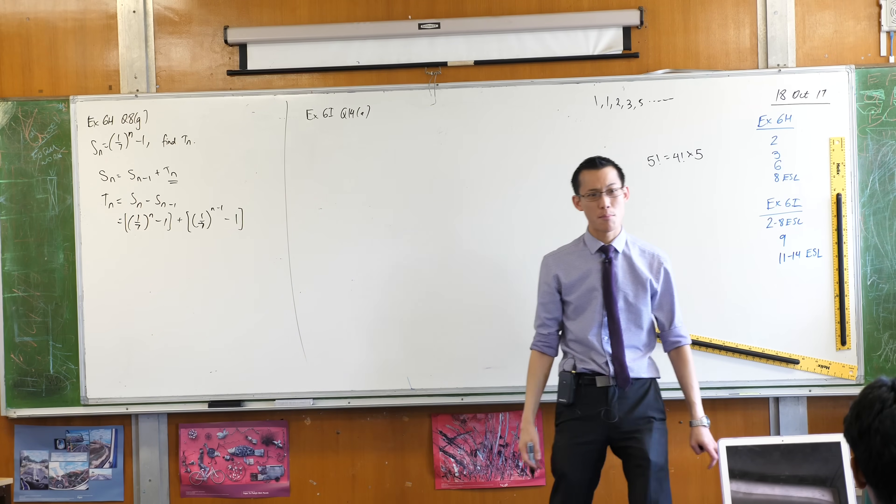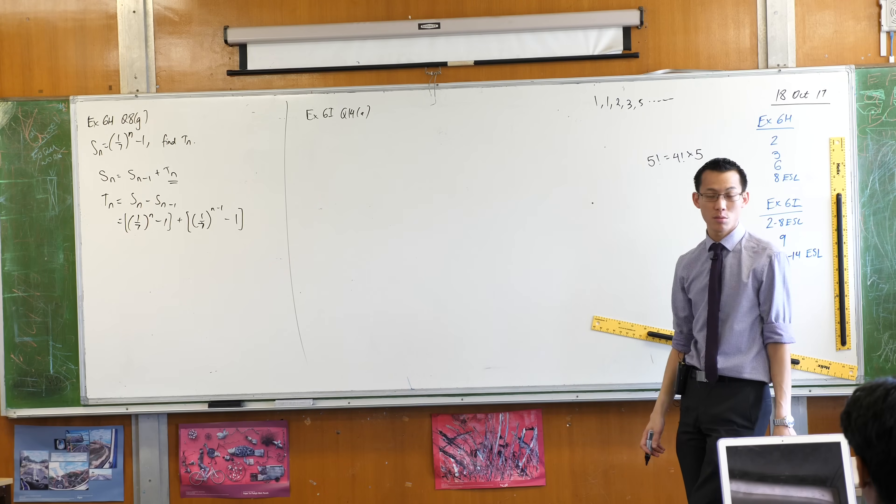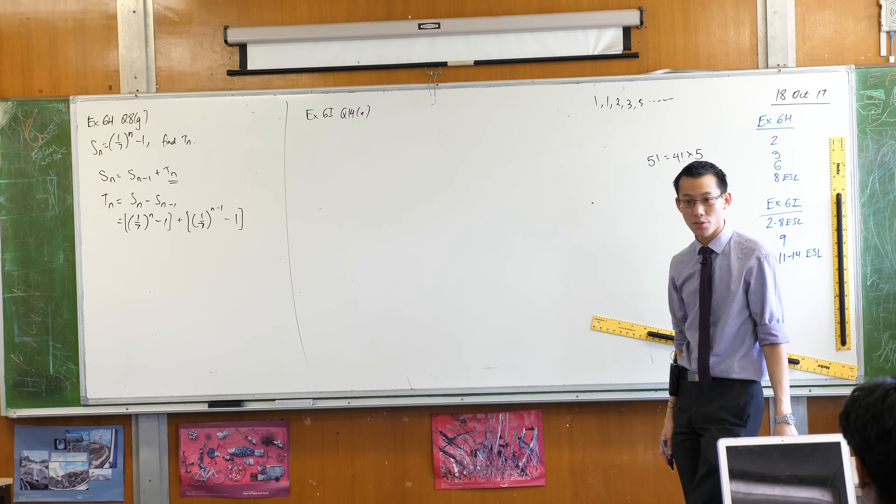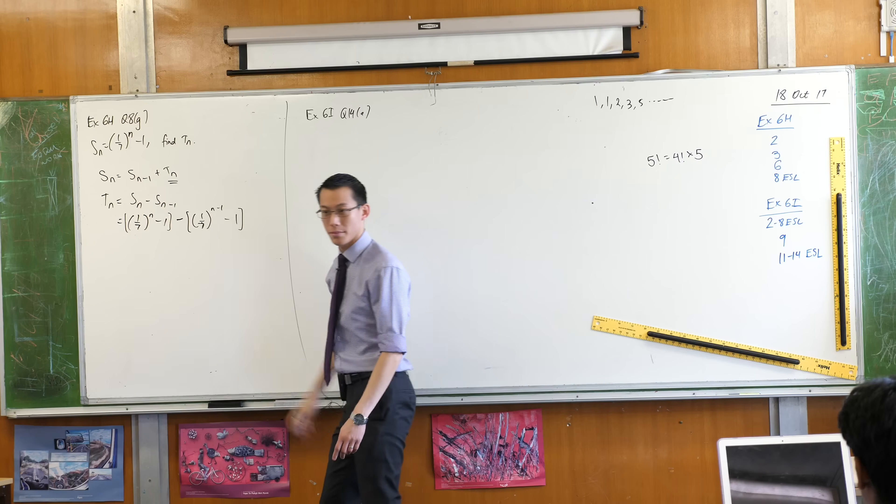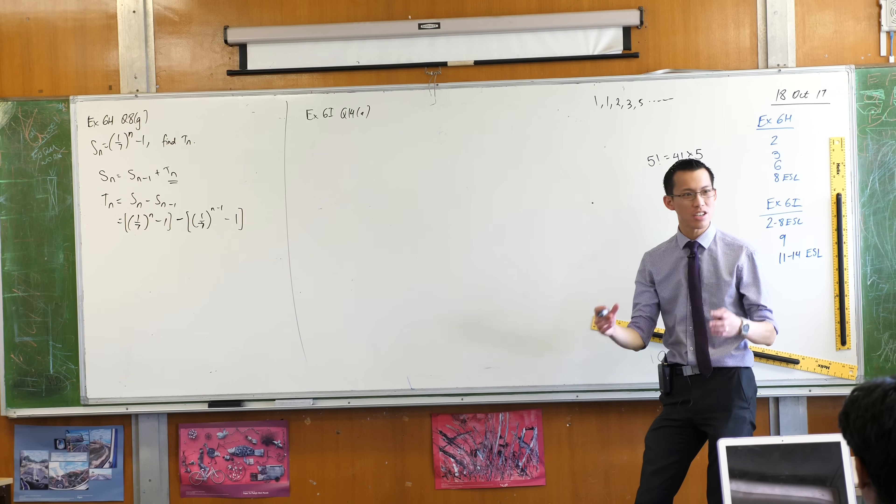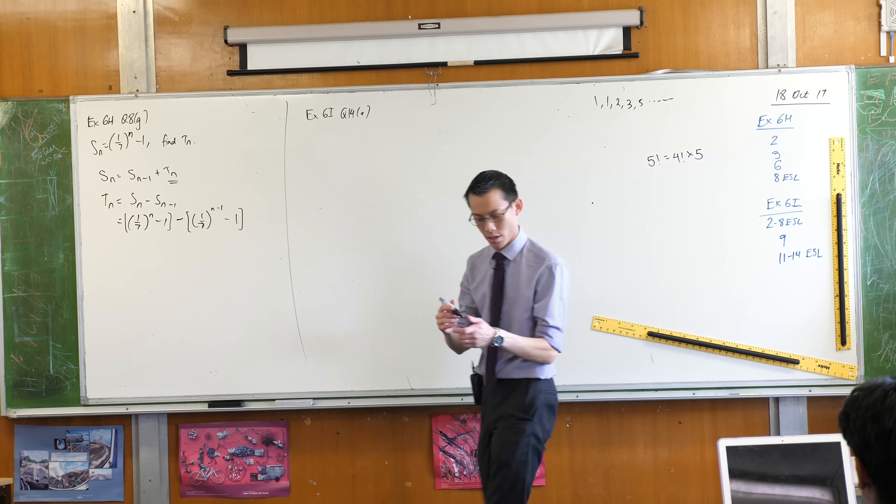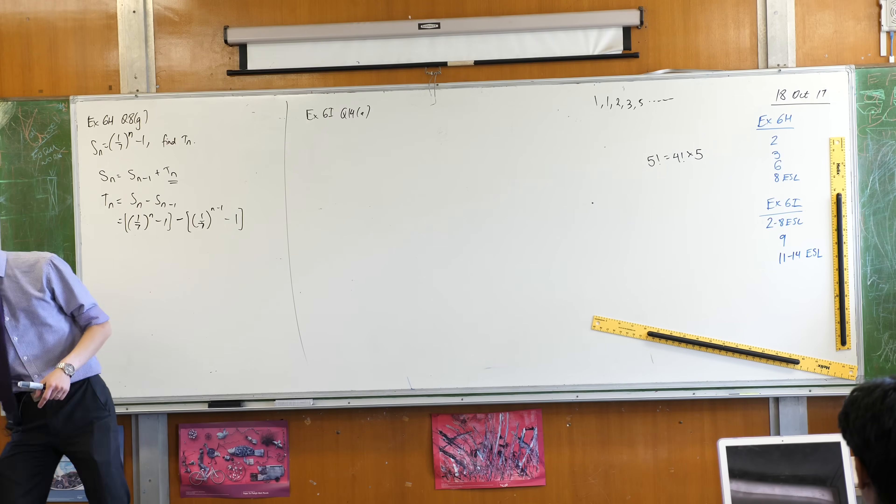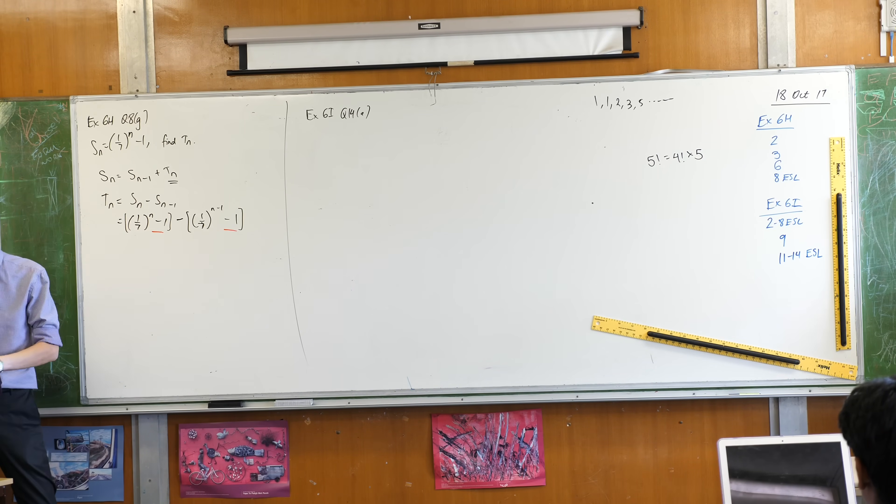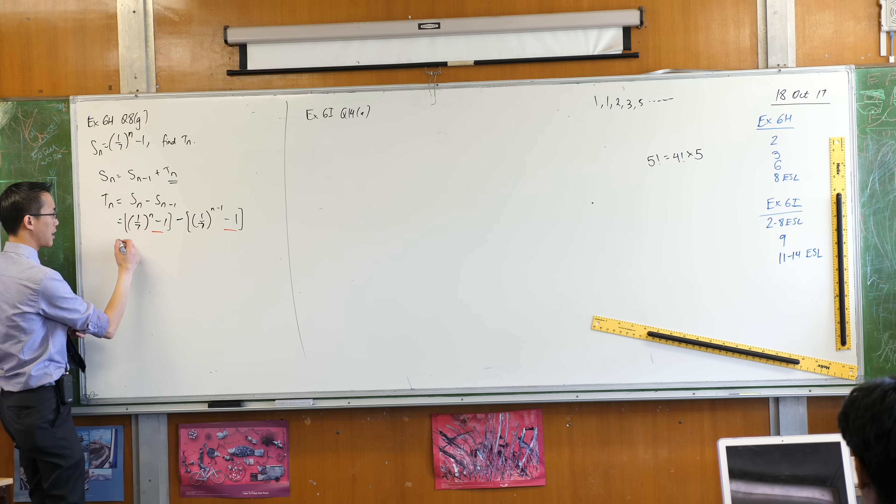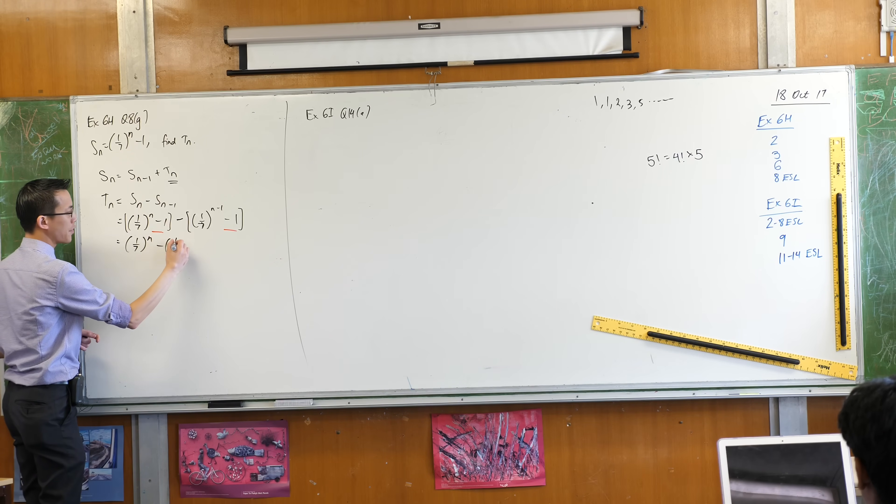Now this does look like a bit of a mess, but you can start to see some stuff's going to cancel, right? That's a mistake. That's better. Some stuff is going to cancel because you see common things in both brackets, right? What can you see that will cancel? Yeah, the negative 1 is going to go because that's going to become a plus 1 with the double negative, so that's really nice. You're going to get this left over.